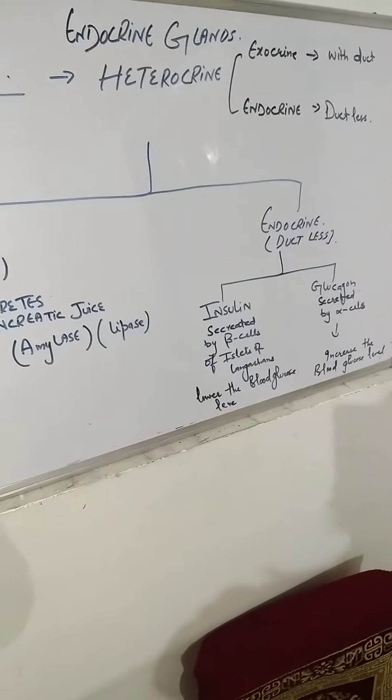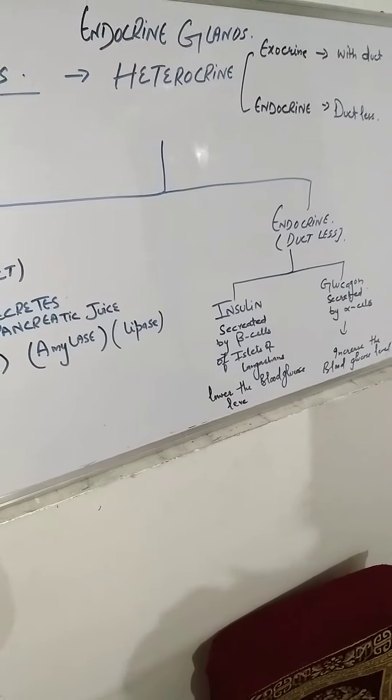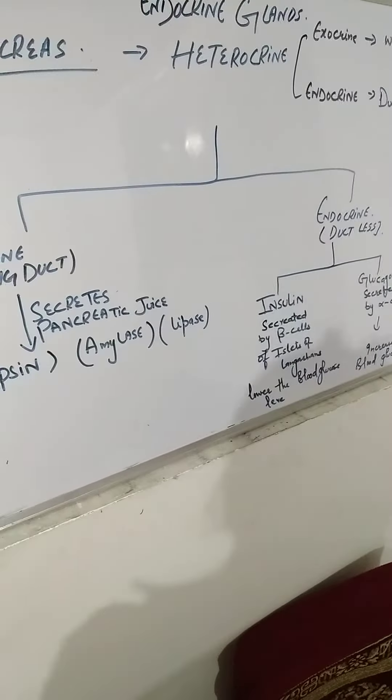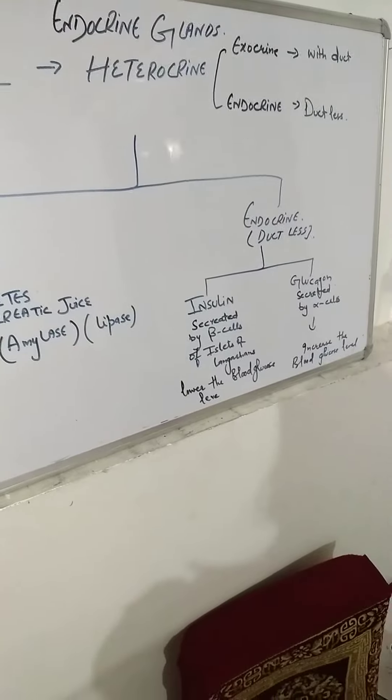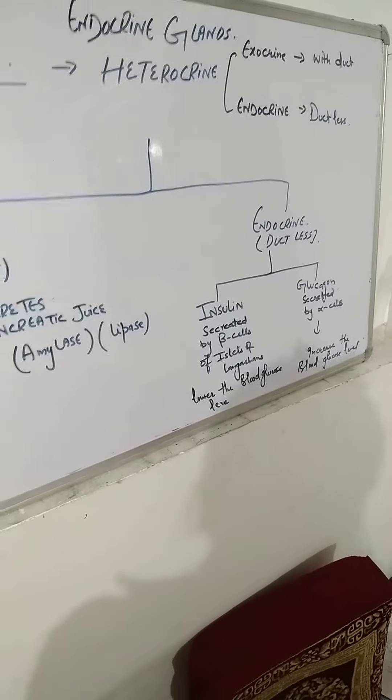As an endocrine gland, the pancreas produces two hormones: insulin and glucagon.